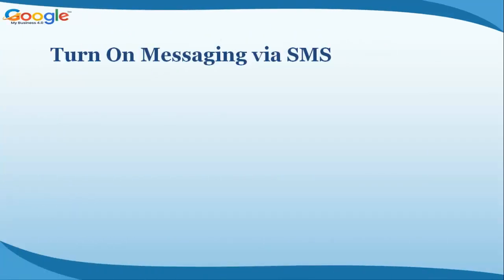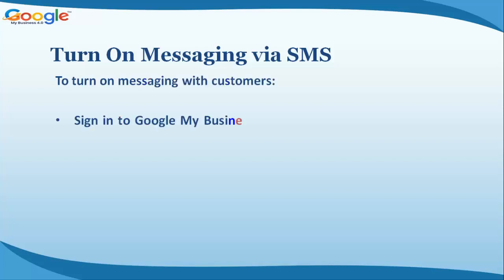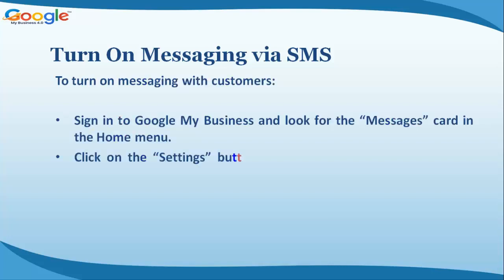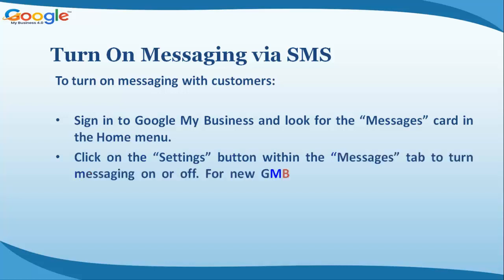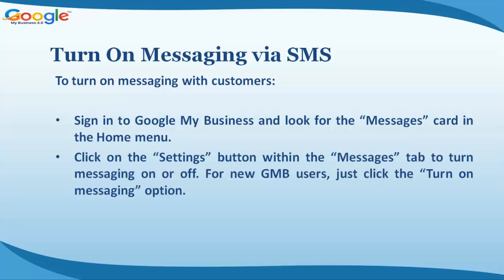To turn on messaging with customers, sign in to Google My Business and look for the Messages card in the Home menu. Click on the Settings button within the Messages tab to turn messaging on or off. For new GMB users, just click the 'Turn On Messaging' option.